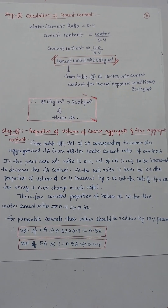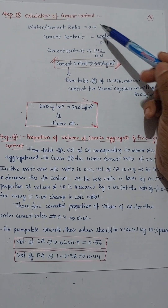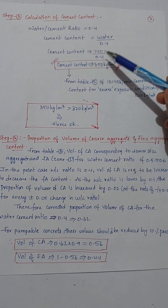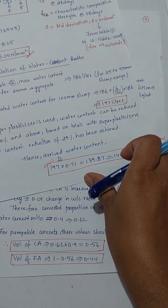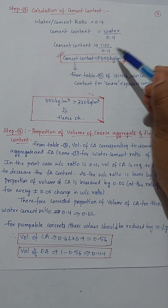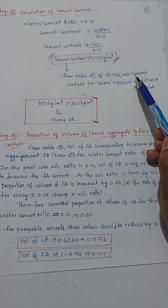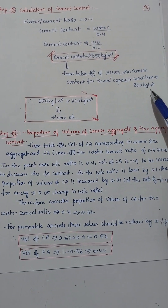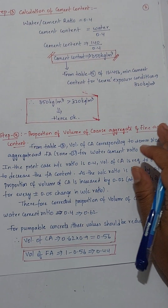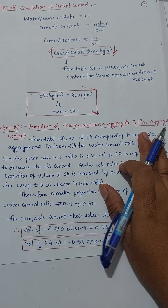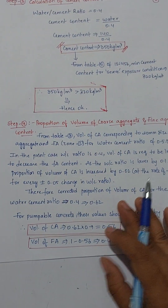Now we calculate cement content. Water-cement ratio equals 0.4 as per the question, so cement content = water / 0.4 = 140 / 0.4 = 350 kg per meter cube. From Table 5 of IS 456, minimum cement content for severe exposure condition is 320 kg per meter cube and maximum is 450 kg per meter cube. Our calculated value of 350 kg per meter cube is above the minimum and below the maximum, so it is safe. Hence, we consider 350 kg per meter cube of cement.